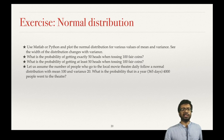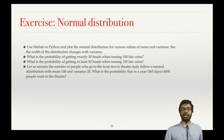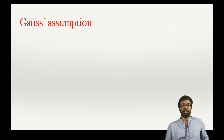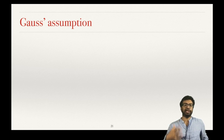The last question: assume the daily flow of people going to a local movie theater follows the normal distribution with mean 100 and variance 20. What is the probability that in a year — 365 days — 4000 people went to this theater? We have introduced the bell curve as a very useful probability distribution that approximates the binomial distribution, and we also saw that it comes up in many areas of real life.